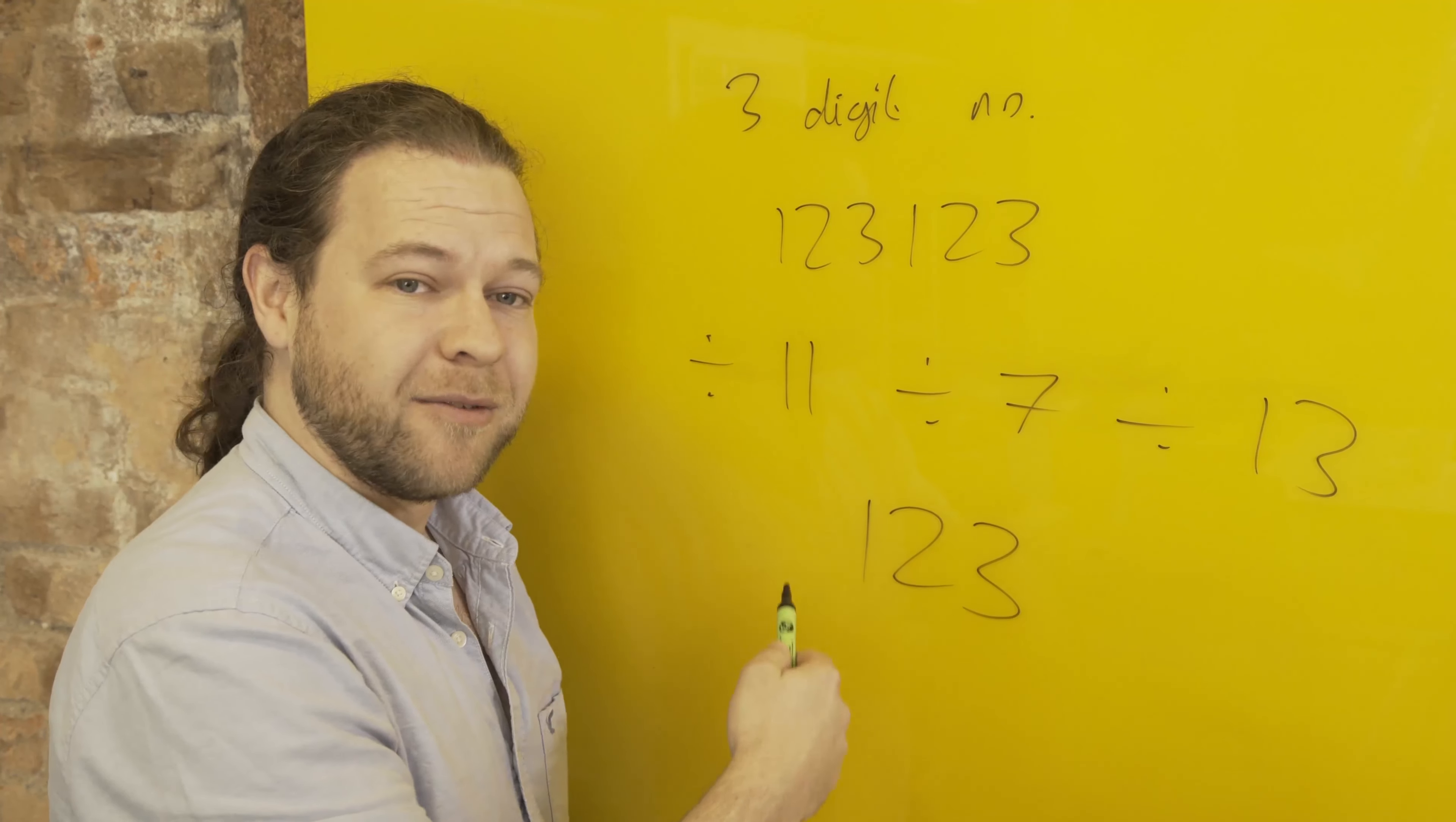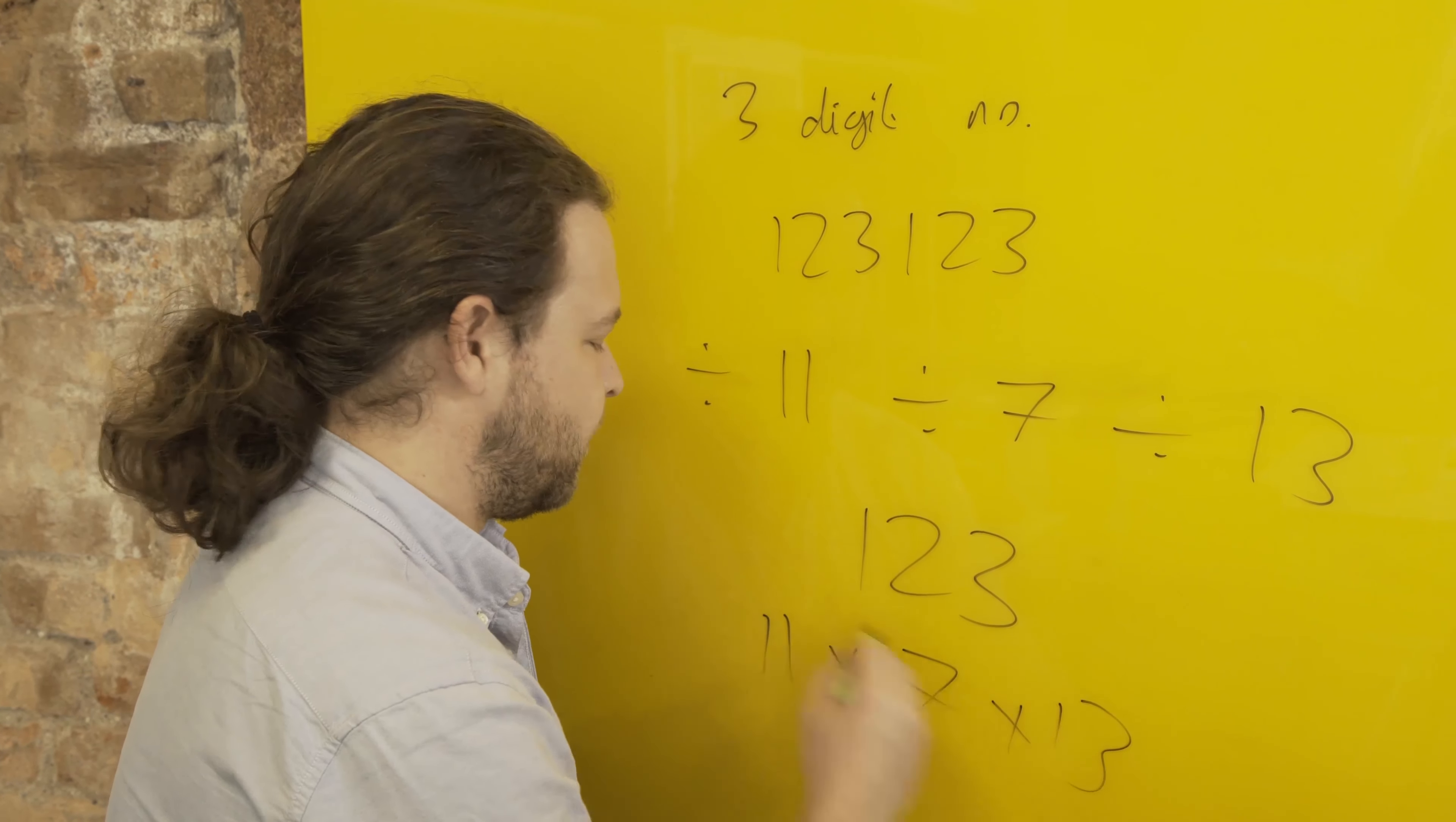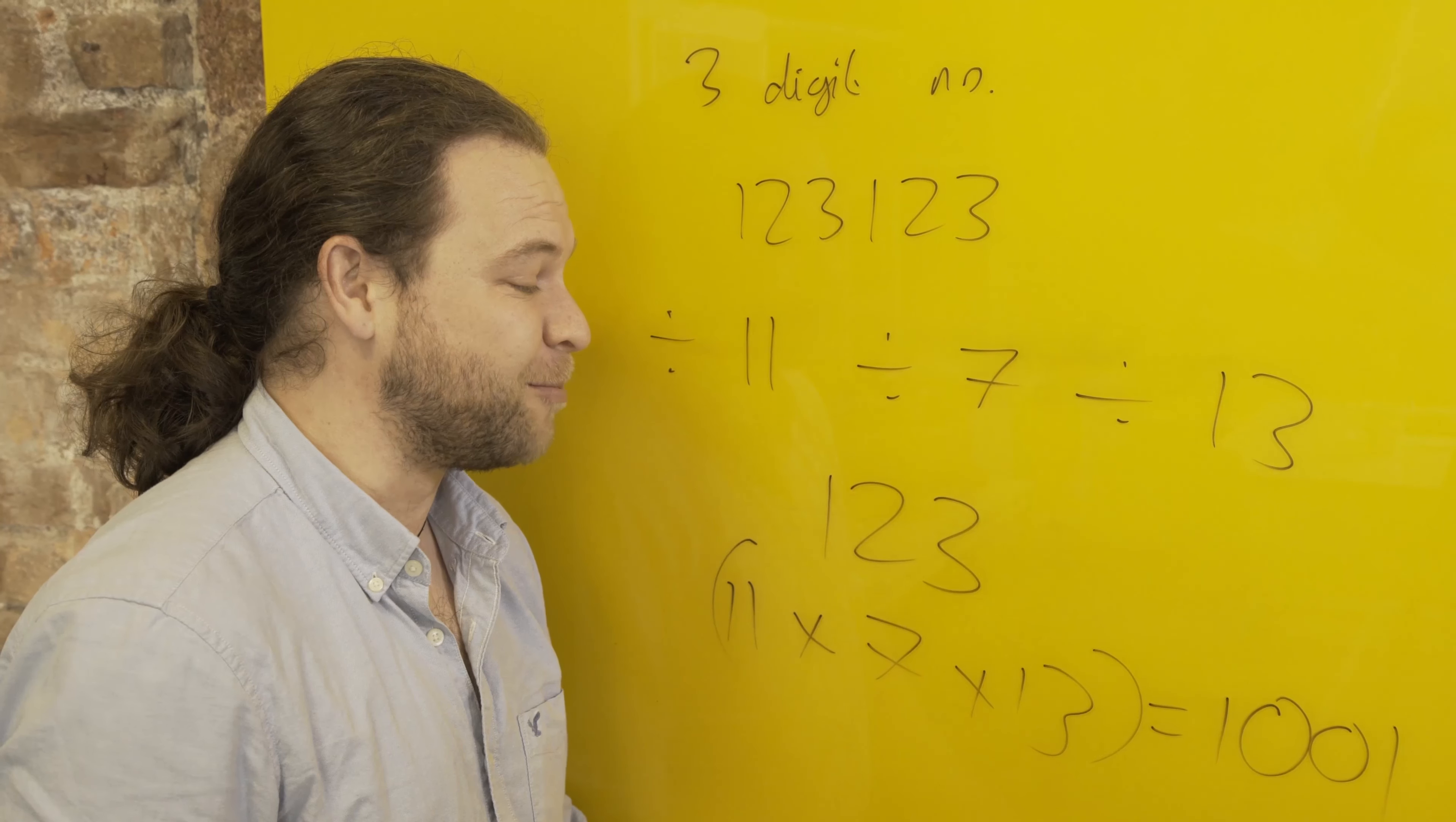And I'm basically just dividing by 11 and 7 and 13. I'm dividing by the product of 11 times 7 times 13, which happens to be 1001. And a little further thought will make you realize that if you multiply a number by 1001, you will get a six-digit number which is the three digits repeated twice.